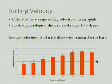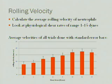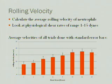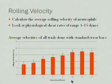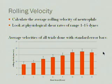From these videos I calculate an average rolling velocity of the neutrophils. I look at physiological shear rates — the flow rate from 1 to 15 dynes, which is about what you would find in the body. This chart shows what we would expect: as shear stress increases, the rolling velocity increases, so the neutrophils actually move faster until a pretty high shear rate where they stay about the same.